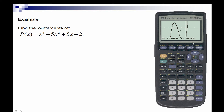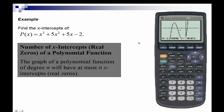Now we get a closer view of the graph. Remember that the number of x-intercepts or real zeros of a polynomial function says that the graph of a polynomial function of degree n will have at most n x-intercepts or real zeros. So this function may have at most three x-intercepts.